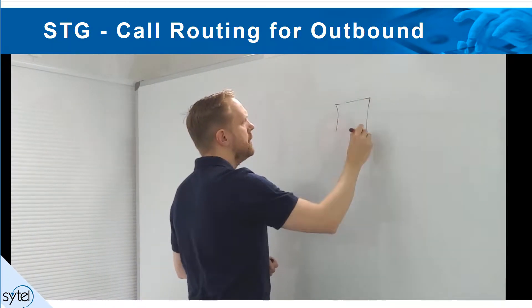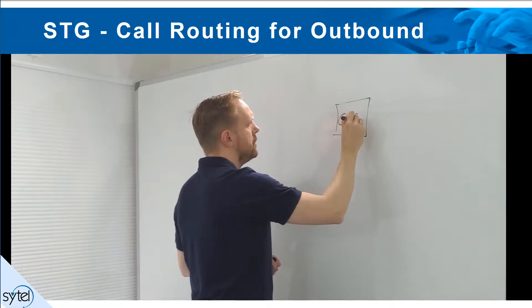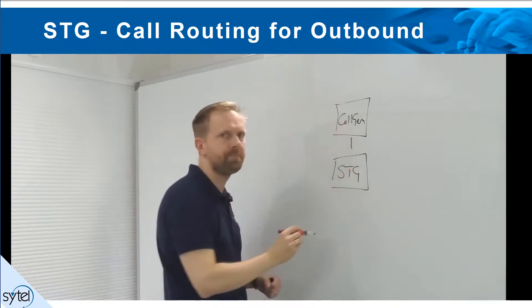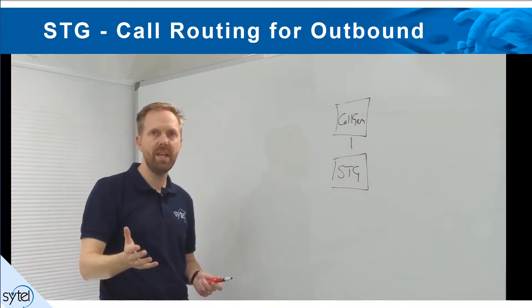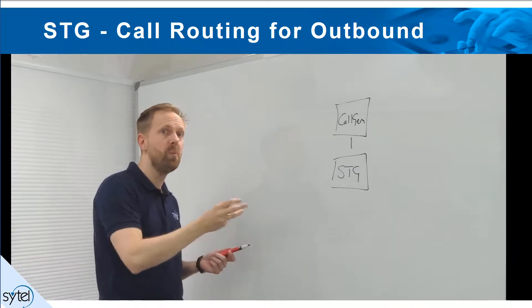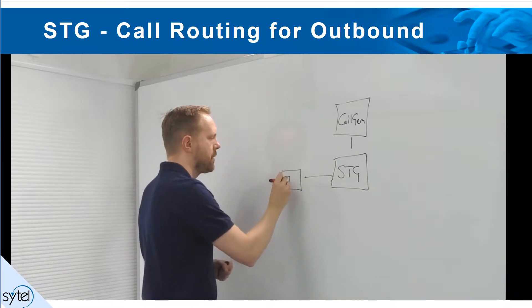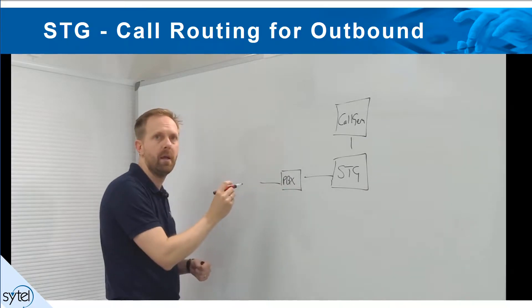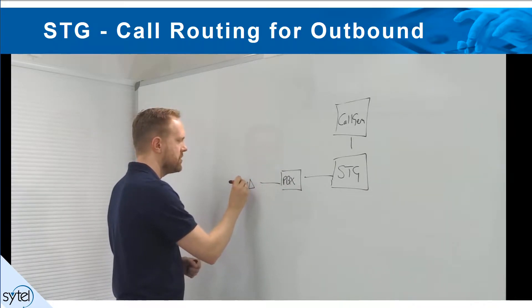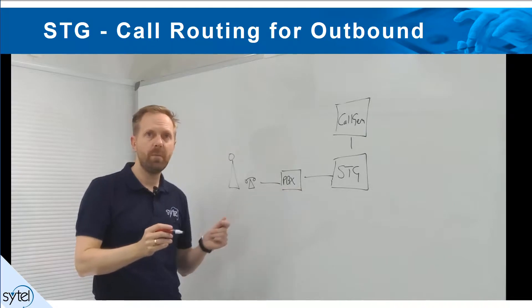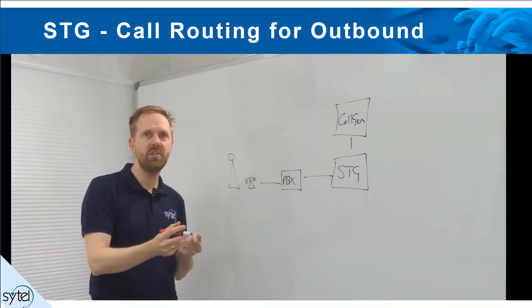In a typical outbound call center scenario, there are two types of calls an STG needs to make. I'm going to draw Call Gem here, and connected to Call Gem I have my STG. On the one hand, we have the call to the agent. This will usually be a call through a PBX or SIP server of some kind. Let's draw a PBX in here, and over here I'm going to draw my agent's telephone and my agent. Typically that would be some quite short extension number, between three and five digits perhaps.